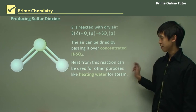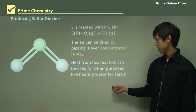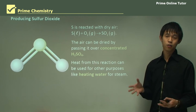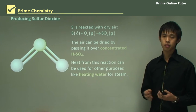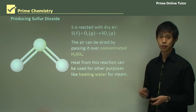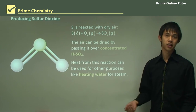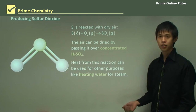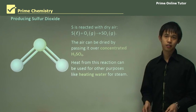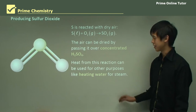The heat from this reaction can also be used for other purposes, like heating water for steam. When the absorbed water mixes with the sulfuric acid it produces more heat, which you can use for something else as well. So we can actually do a lot with this sulfuric acid, and even use it to produce more sulfuric acid in the process.